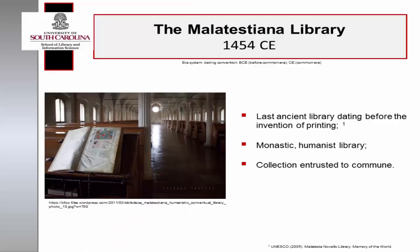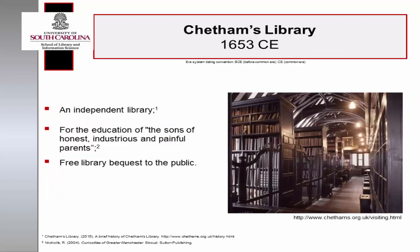Public libraries in the contemporary sense of the term did not emerge until the mid-19th century, but there were exceptions. The Malatestiana Library was opened in Cesena, Italy in 1454 CE. The UNESCO Memory of the World Register lists it as the last ancient library dating before the invention of printing. Malatesta Novella collaborated with Franciscans to sponsor the library, but entrusted the collection to the commune of Cesena. Novella wanted the library to be a universal, humanistic library open to the public. Chatham's Library was established as a free reference library in Manchester, England in 1653 CE.